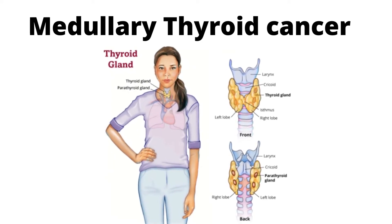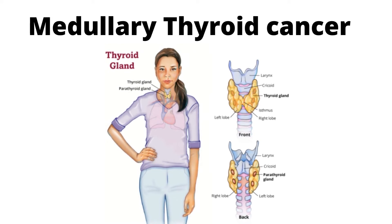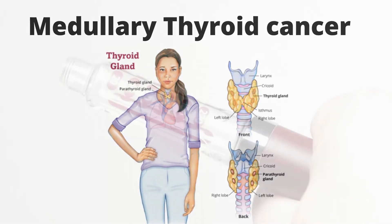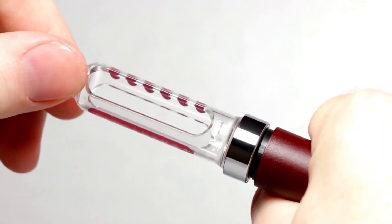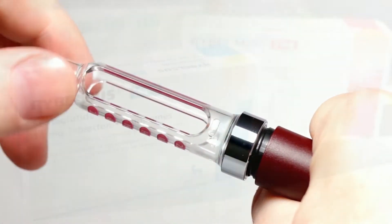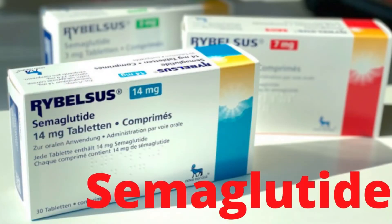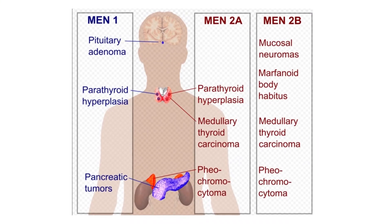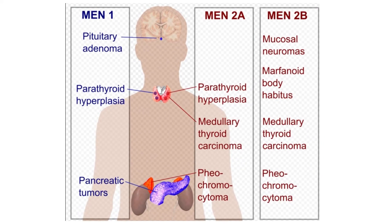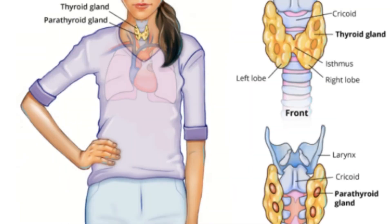Medullary thyroid cancer is a form of thyroid cancer that arises from the parafollicular cells, which produce the hormone calcitonin. Therefore, do not use Ozempic injection or other medications containing semaglutide if you or a member of your family has or had multiple endocrine neoplasia type 2 or medullary thyroid cancer.